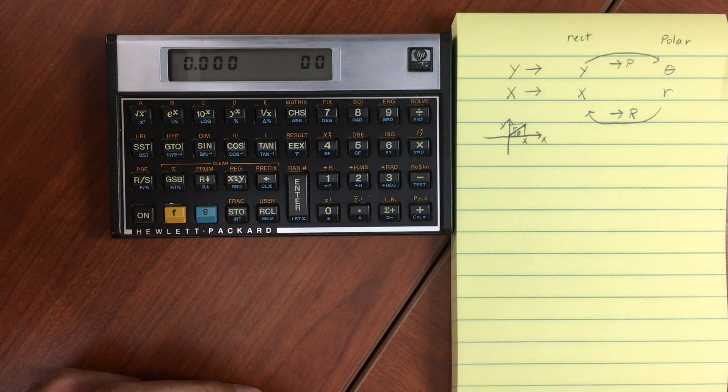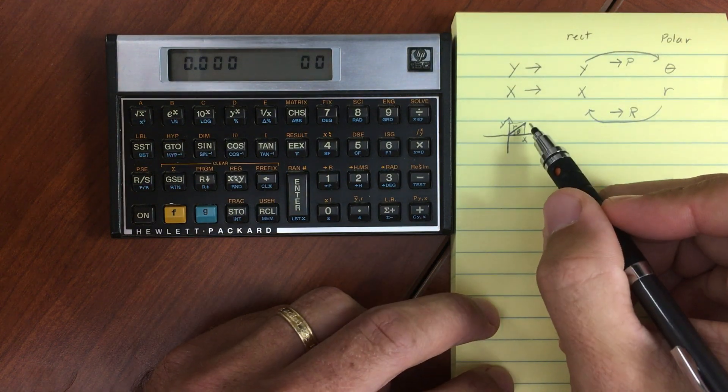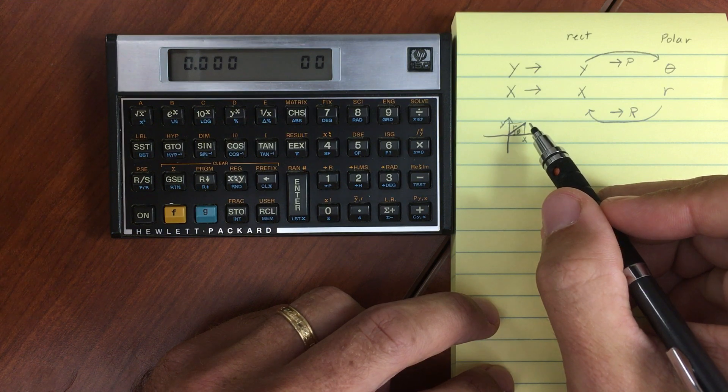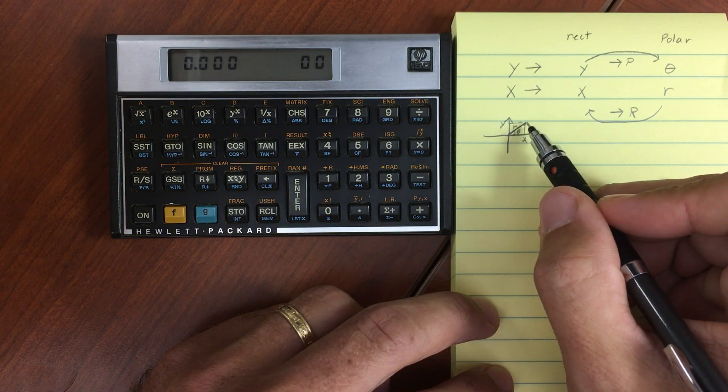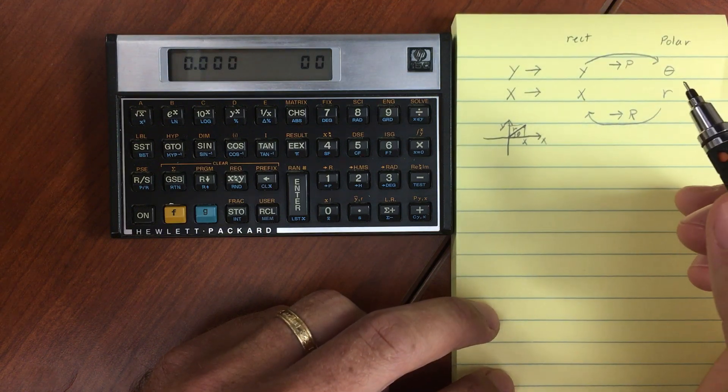I'm going to talk a little bit about polar and rectangular conversion. So rectangular would be something in the xy plane where you have a point that is x units over and y units up. And you can convert that to something with length r and at angle theta, a different representation.